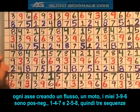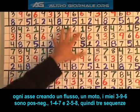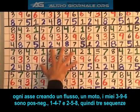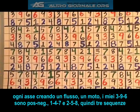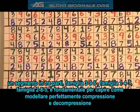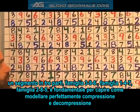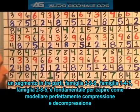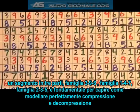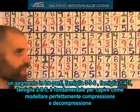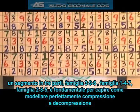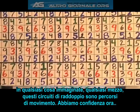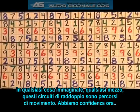So I go first — my 3, 9, and 6 are all positive, negative. Next, my 1, 4s and 7s. And on the next one, my 2, 5, and 8s. So it's a 1, 2, 3 sequence — a three-part sequence. Family number group one is 3, 9, 6. Family number group two is 1, 4, and 7. Family number group three is 2, 8, and 5. This is essential to understand for understanding how to perfectly model compression and decompression, no matter what you're talking about, no matter what the medium. These doubling circuits are the pathways of motion.